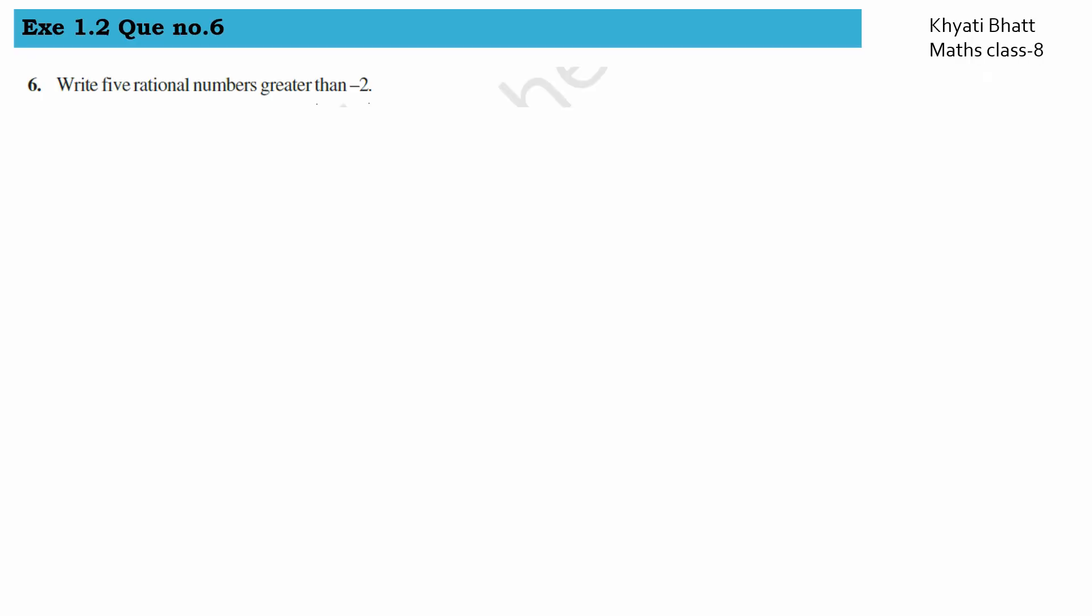Exercise 1.2, question number 6: write 5 rational numbers greater than -2. Greater than -2 means we have to go towards zero, it will be in between -2 and -1 and towards 0. So it has to be in between -2 to -1 or -1 to 0.